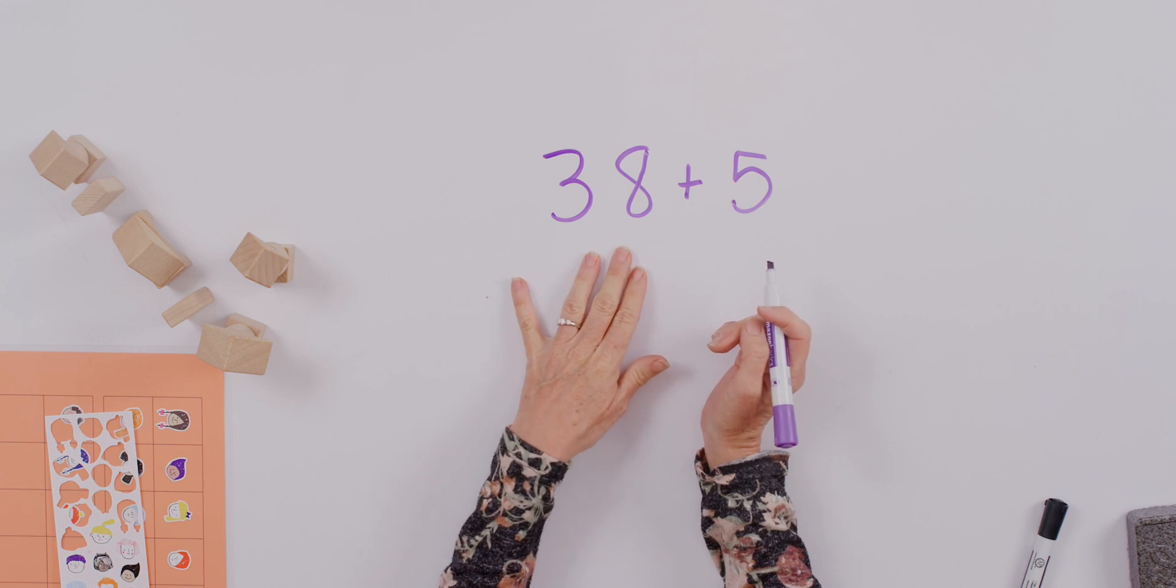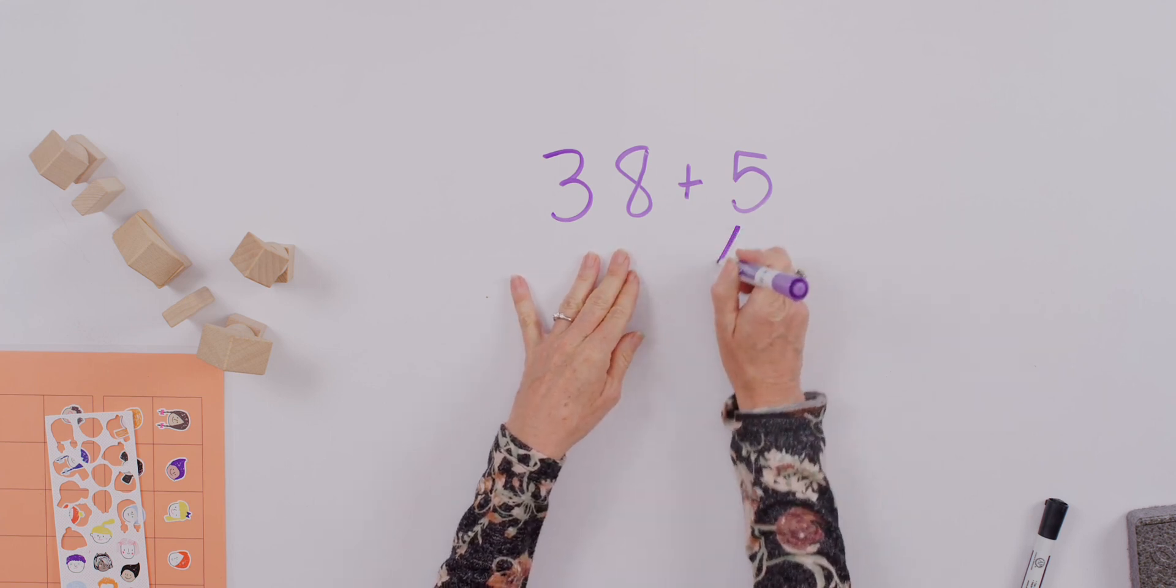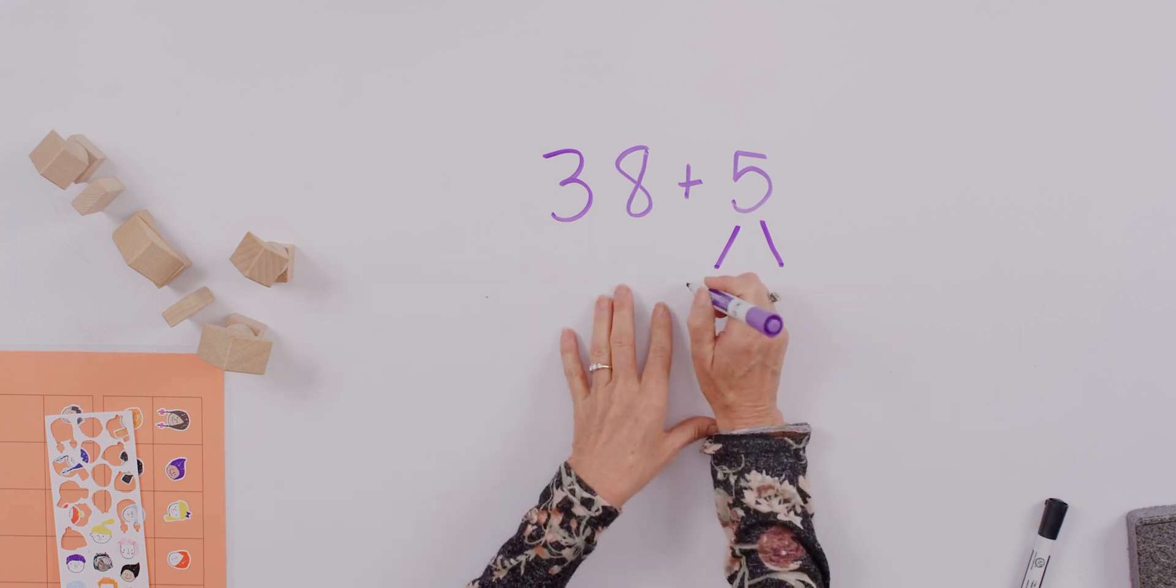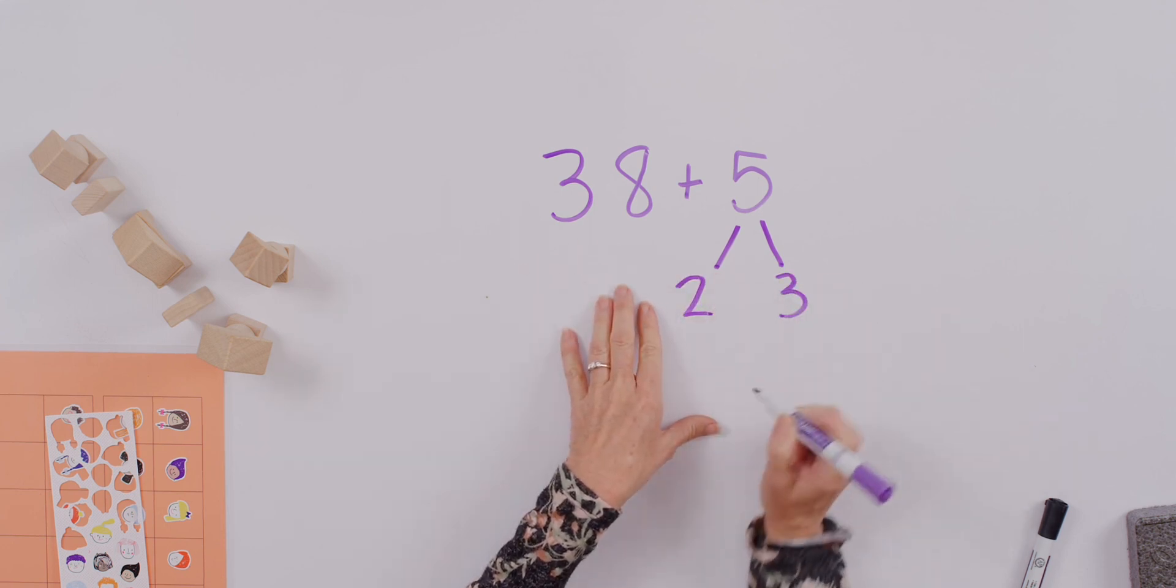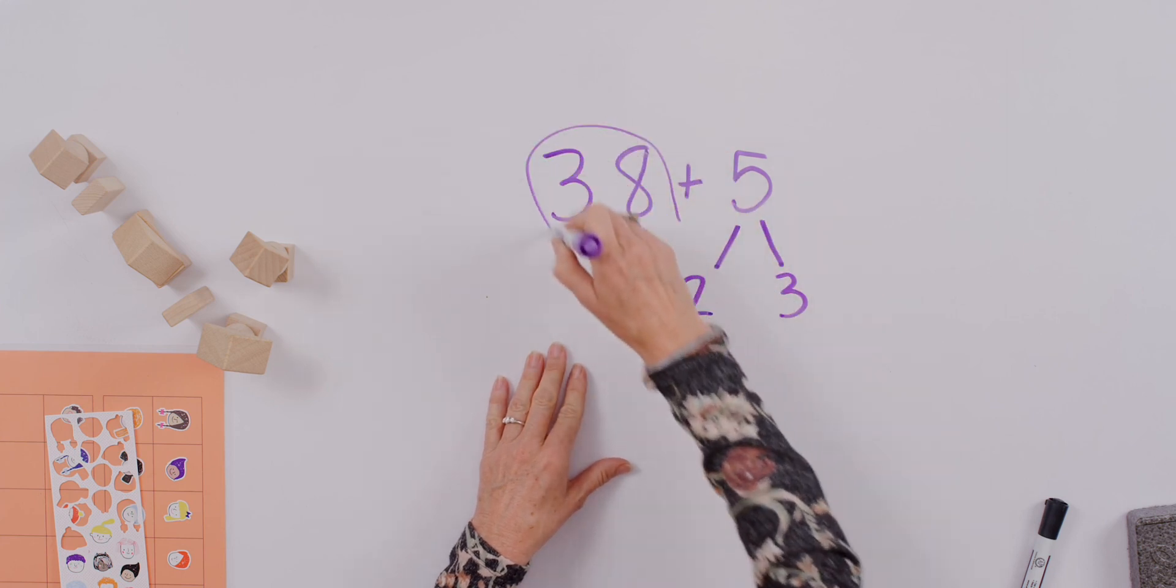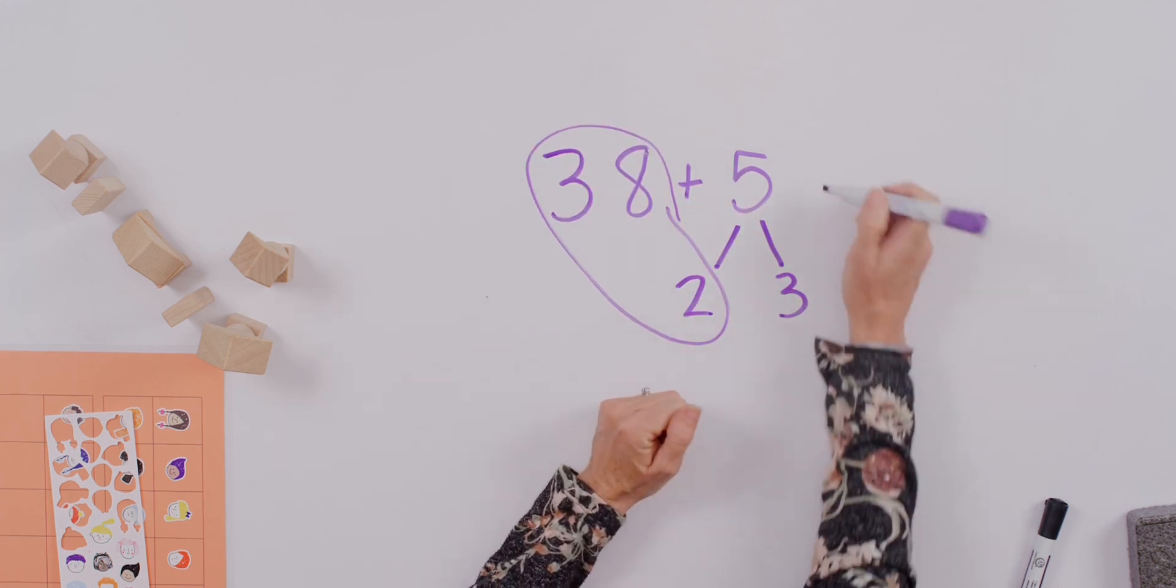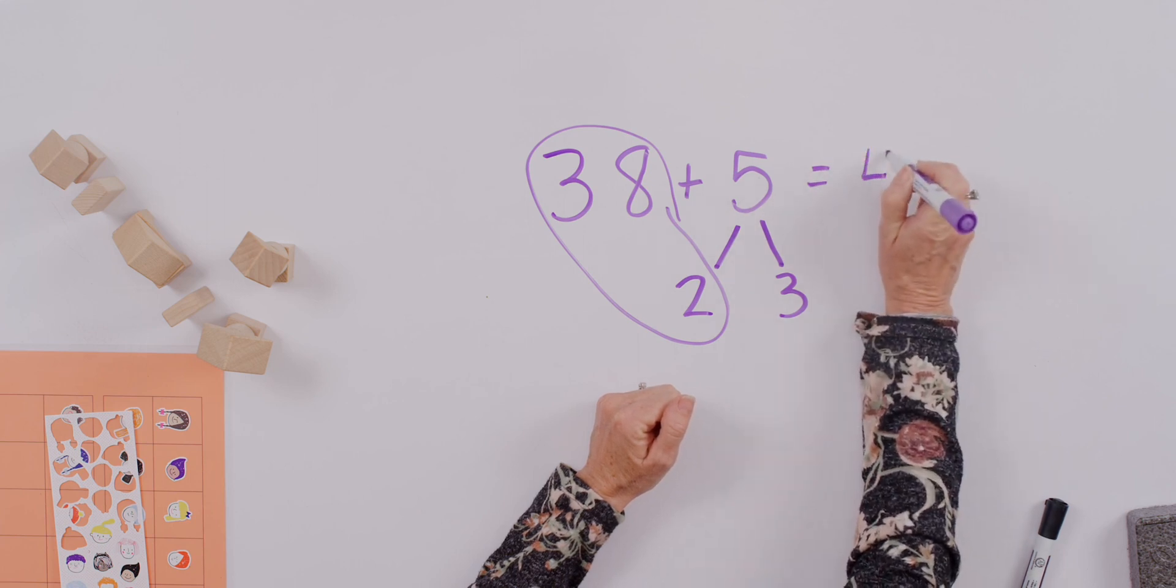So thirty-eight is really close to forty. Let's work with that. How many more do I need from my five? I've got my number bond of two, three, and five. Now, here I can say thirty-eight plus two gives me forty, and I have three more for forty-three.